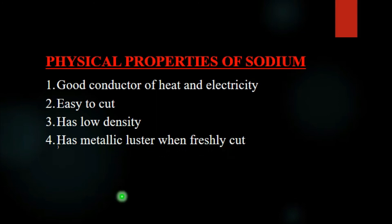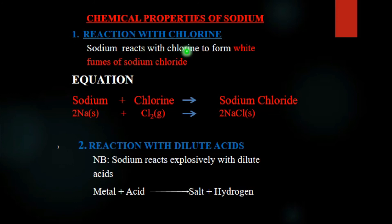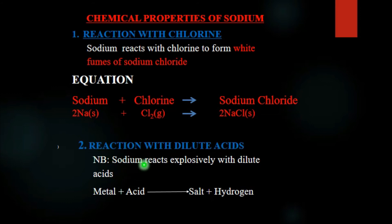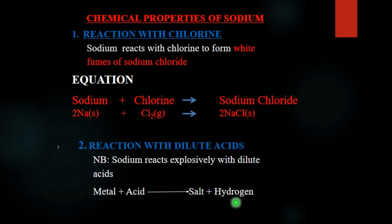Chemical properties: when sodium reacts with chlorine gas, it forms sodium chloride — a white solid — which is the common table salt used as a food additive. Sodium also reacts with dilute acids explosively, since it is a very reactive metal. The general equation is: metal + acid → salt + hydrogen gas. The confirmatory test for hydrogen gas is that it extinguishes a burning splint with a pop sound.